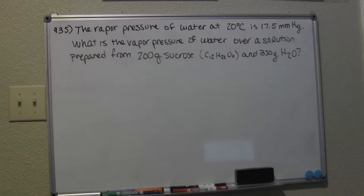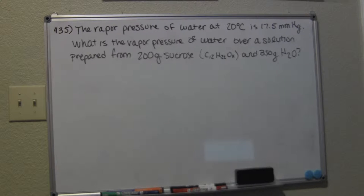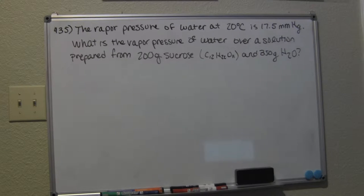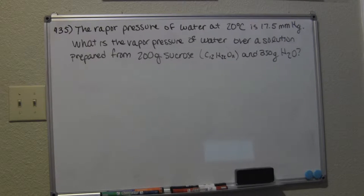Hey guys, I'm Daniel. The question we have here is: the vapor pressure of water at 20 degrees Celsius is 17.5 millimeters of mercury. What is the vapor pressure of water over a solution prepared from 200 grams of sucrose and 350 grams of H₂O?